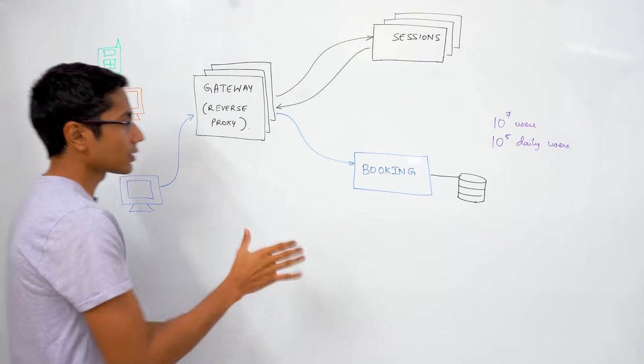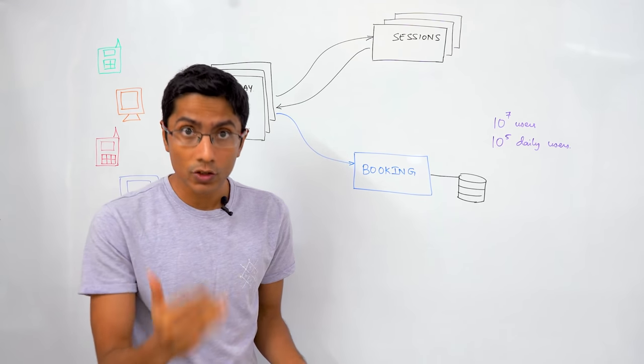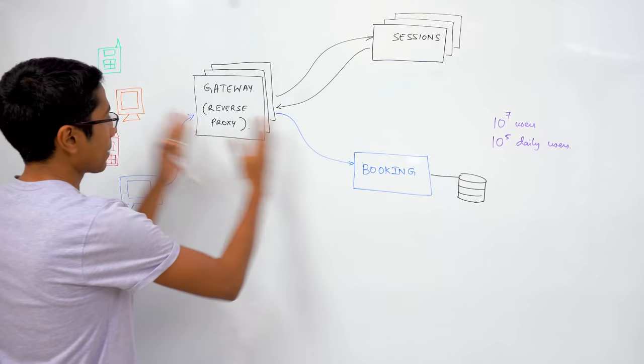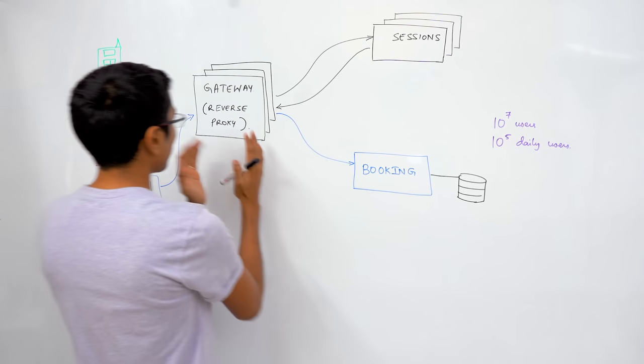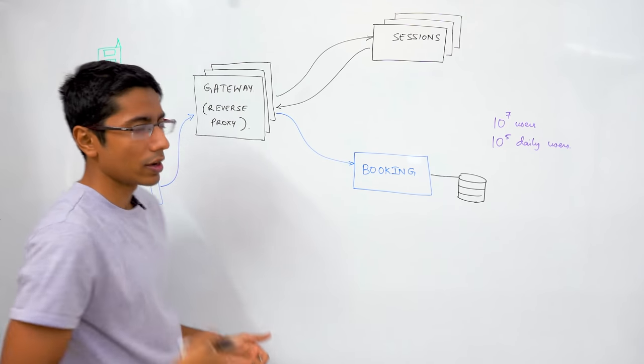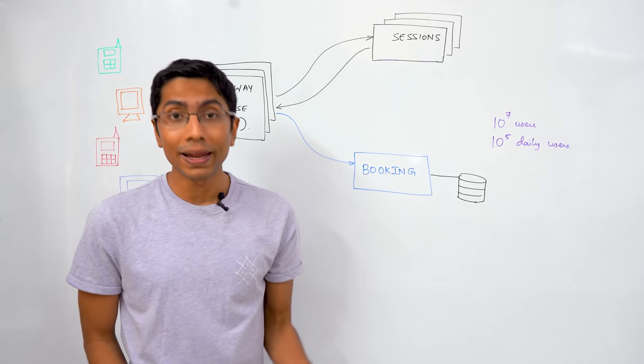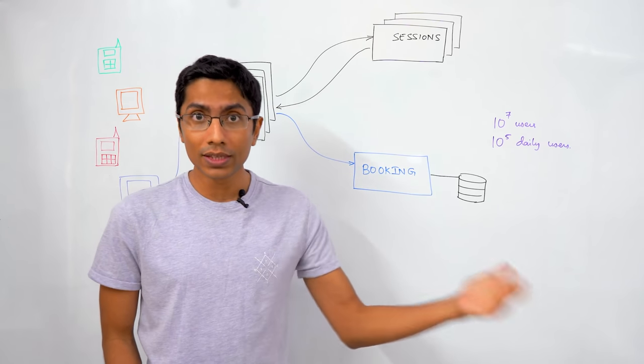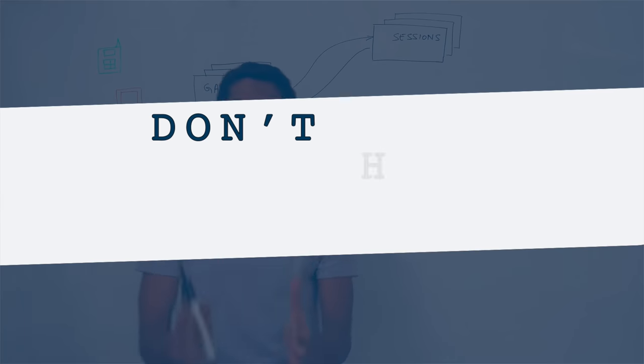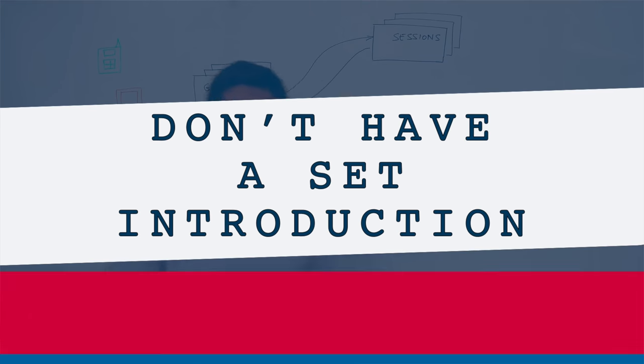A gateway in a real system is super important. It is super useful. It does separate out the system, the internal system from the external system, brings in security, brings in rate limiting, brings in a lot of good features. Do you need to explain that in every system design interview? No. So don't have a set introduction. That's the first point.